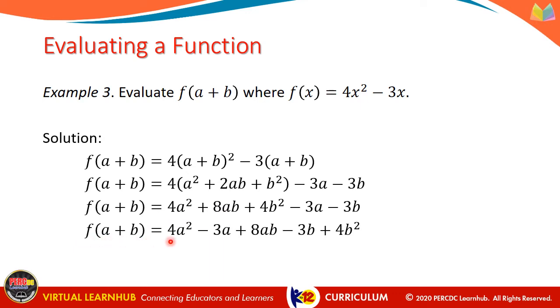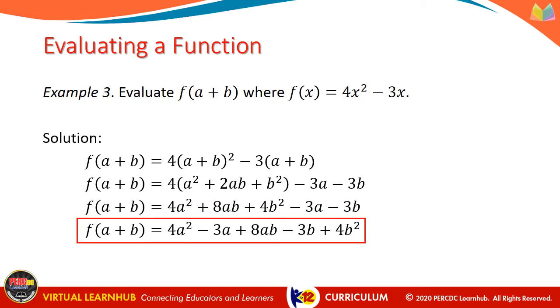So our final answer is f of a plus b equals 4a squared plus 8ab plus 4b squared minus 3a minus 3b.